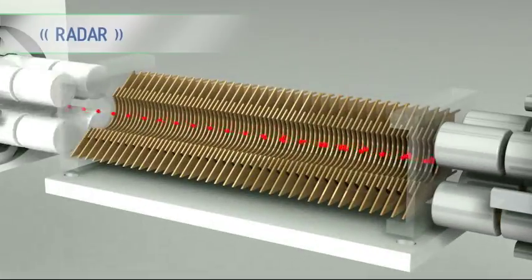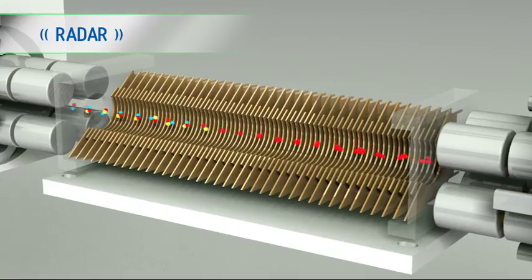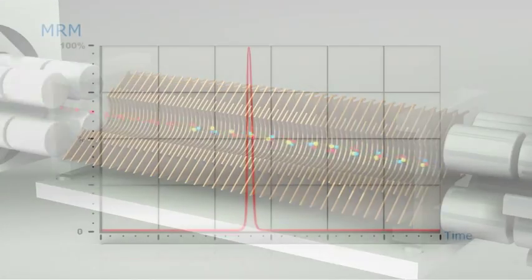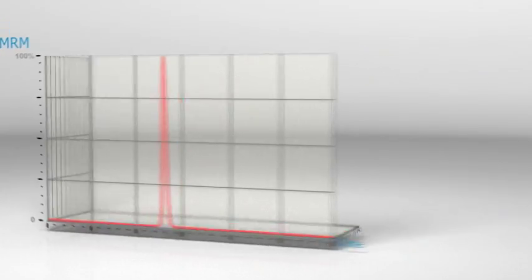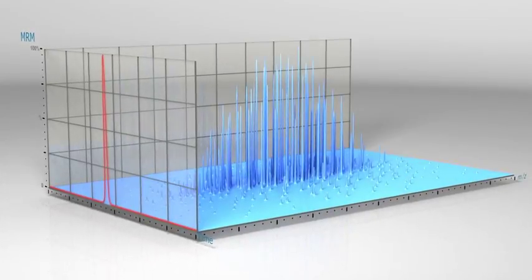Information-rich quantitative data is accessible with radar and PICS functions, allowing you to understand sample complexity and reduce uncertainty during method development.